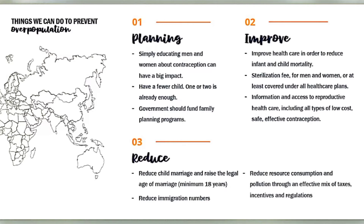Number three: reduce. Reduce child marriage and raise the legal age of marriage to a minimum of 18 years old. Next, reduce immigration numbers. Also, reduce resource consumption and pollution through an effective mix of taxes, incentives, and regulations. To sum up, the things we can do to prevent overpopulation are to plan, improve, and reduce.